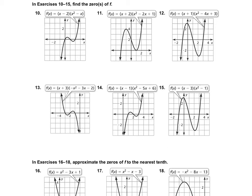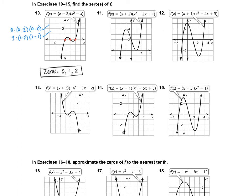Numbers 10 through 15 on the next page are asking us to find the zeros, and notice that the equations are already graphed for us — that makes it pretty easy. On number 10, the answer has to be these 3 points, so my zeros are 0, 1, and 2. I can double check by plugging those numbers back in. Plugging in 0 gives 0, plugging in 1 gives 0 because the second piece equals 0, and plugging in 2 gives 0 because 2 minus 2 is 0. That's how we check our answers.